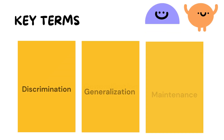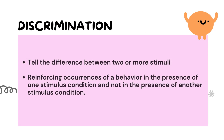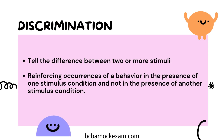Let's define discrimination. Discrimination refers to the ability to distinguish between two or more stimuli based on specific characteristics. It involves recognizing differences in stimuli and responding differently to them. Discrimination can also involve reinforcing a behavior when a specific stimulus is present while not reinforcing the same behavior in the presence of another stimulus.